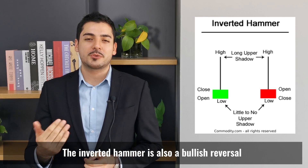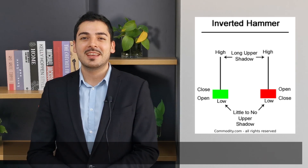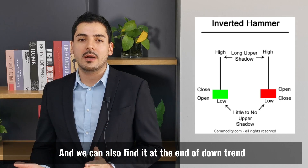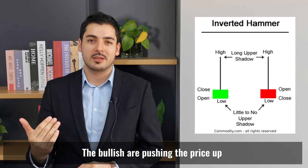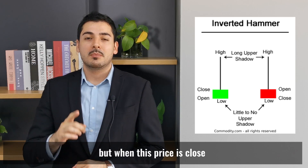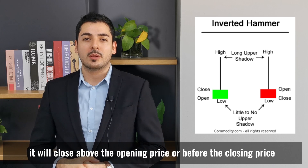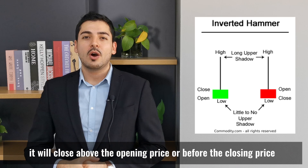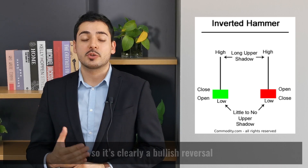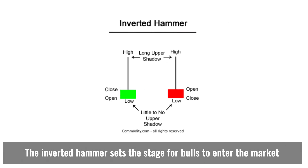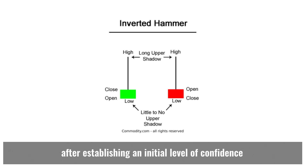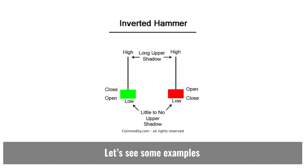The inverted hammer is also a bullish reversal pattern and we can also find it at the end of a downtrend. What's happening here is that the bulls are pushing the price up, but when the candle closes, it will close above the opening price, making it clearly a bullish reversal. The inverted hammer sets the stage for bulls to enter the market after establishing an initial level of confidence.